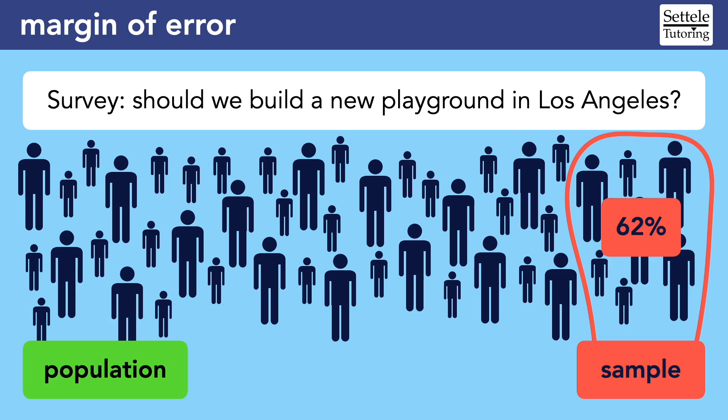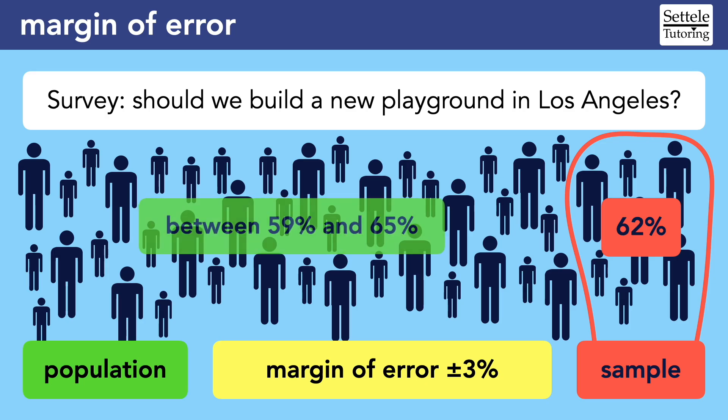Through lots of other statistical formulas that we do not need to know for the SAT, we also found that our sample survey has a margin of error of 3%. That means that when we extrapolate back to our total population, it's plausible or likely that the actual percent of people who support the park is somewhere between 59% and 65%. We got those numbers by adding and subtracting 3% from the 62% we found in our sample.